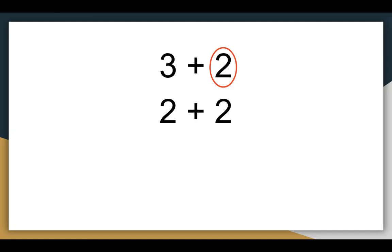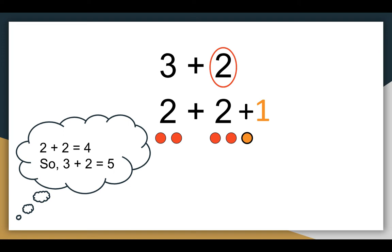Thinking about this, I know that two plus two is four, but I'm not adding two plus two — I'm adding two plus three. I know that three is just one more than two, so all I have to do is add one more. In my brain, I'm thinking two plus two is four, and I'm one away, so I just need to add one more. So three plus two is five.